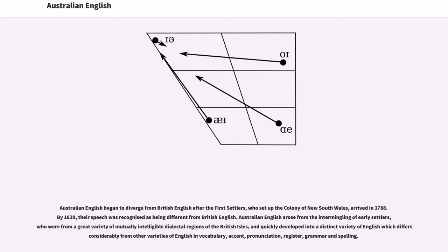Australian English arose from the intermingling of early settlers, who were from a great variety of mutually intelligible dialectal regions of the British Isles, and quickly developed into a distinct variety of English which differs considerably from other varieties in vocabulary, accent, pronunciation, register, grammar and spelling.